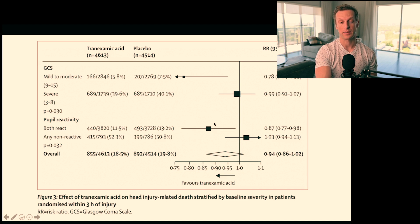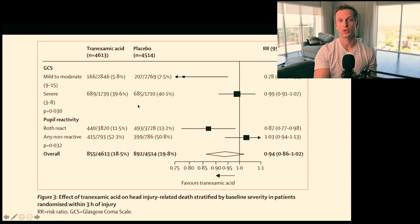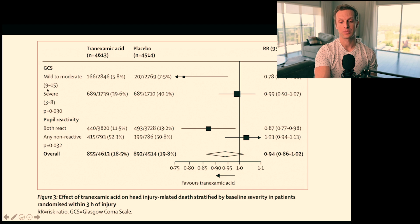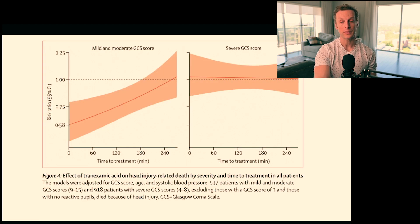If you take away patients with non-reactive pupils and keep those with at least one reactive pupil, you actually see a significant benefit of tranexamic acid. Breaking it down further: patients with mild head injury — GCS 9 to 15 — show a much more powerful effect compared to GCS 3 to 8. You actually see a mortality benefit in that milder group. Patients with GCS 3 to 8 show essentially no difference — a relative risk of 0.99. So the patients who benefit are those with milder head injuries.